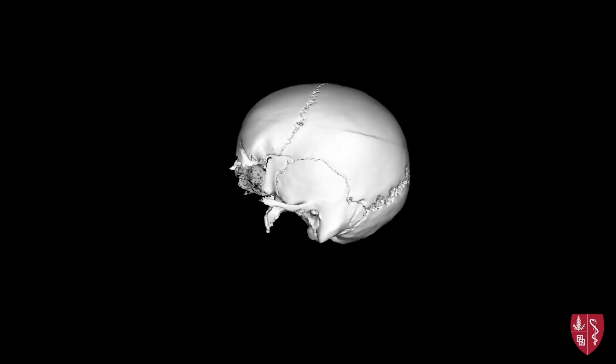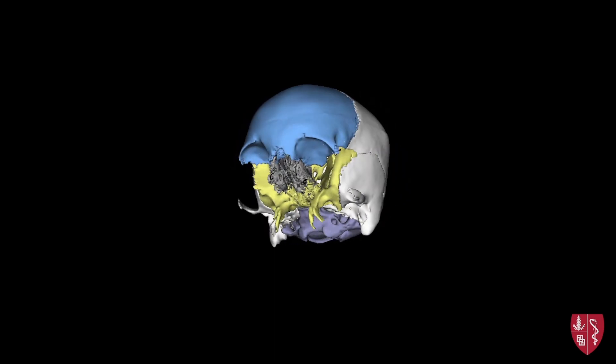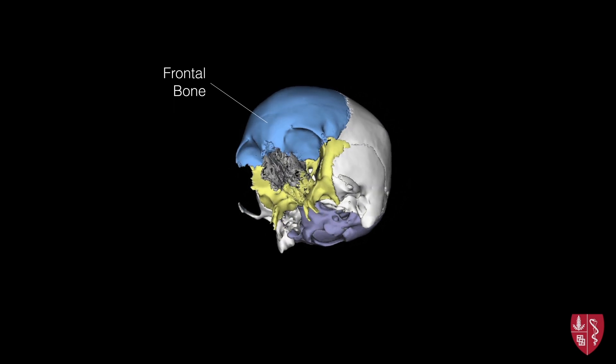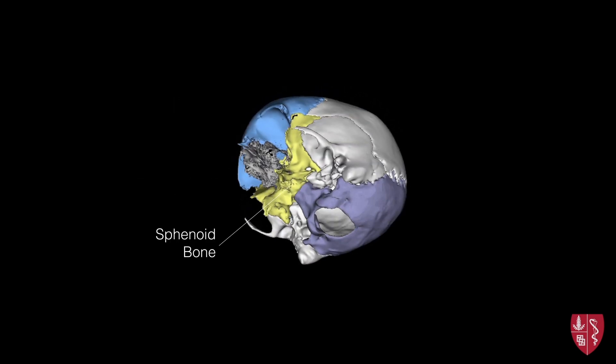The neurocranium, or brain case, consists of eight bones, four of which are singular and in the midline, beginning anteriorly with the frontal bone, the ethmoid bone, the sphenoid bone, and the occipital bone.